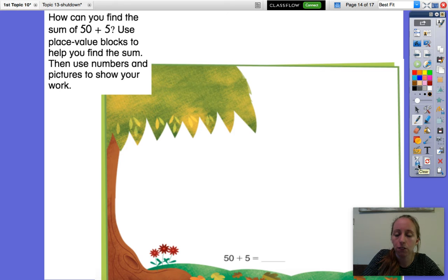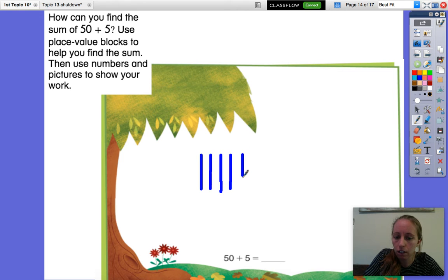Okay, so for this problem 50 plus 5, 50 and 5 are our addends. We're going to find 50 plus 5 and find our sum. So if I wanted to add 50 plus 5, I want to take the first number 50 and draw it using place value blocks. 10, 20, 30, 40, 50. Okay, I have 50 here.